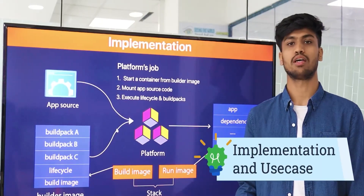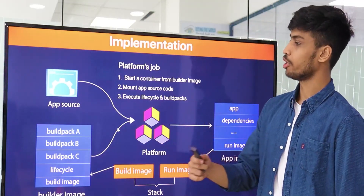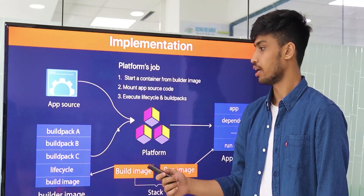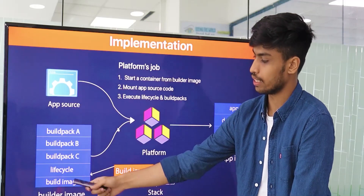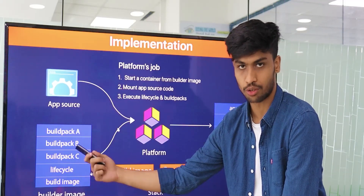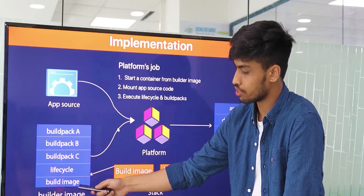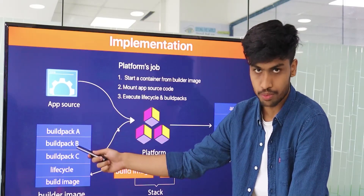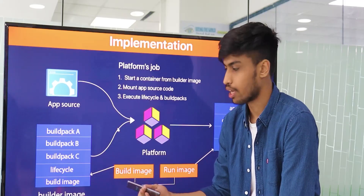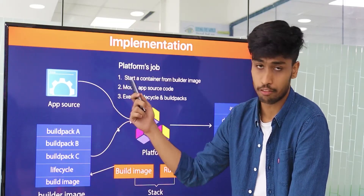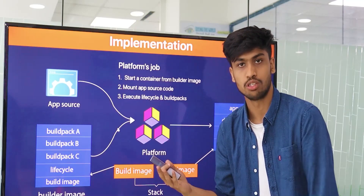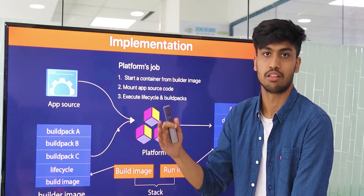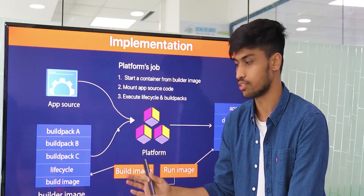In the implementation, we have the app source — the source code provided by the developers — and next we have the builder image, which is provided by buildpacks.io. The builder image contains components: buildpacks A, B, and C, which are groups containing executables, and also the lifecycle — defining how the source code will be updated, deleted, or version-updated over time.